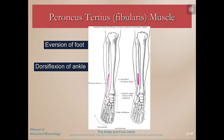The final peroneus muscle is the peroneus tertius, the smallest of the three, which also does eversion. However, its tendon comes down on the anterior aspect right above the fifth toe, and so it causes dorsiflexion instead of plantar flexion.